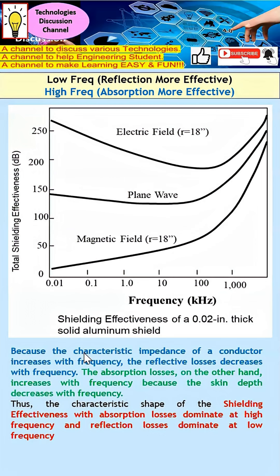In short, the characteristic impedance of a conductor increases with frequency. So when frequency increases, reflection loss actually decreases — you can see this trend clearly. Absorption loss, on the other hand, actually increases with frequency, because the skin depth decreases with frequency.